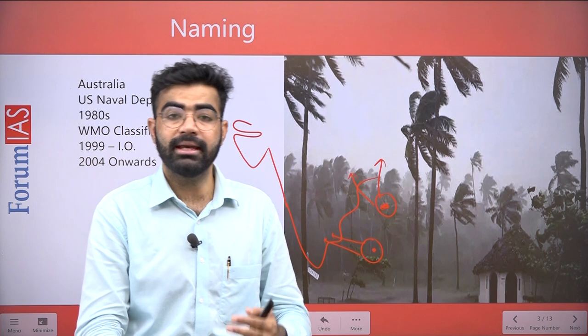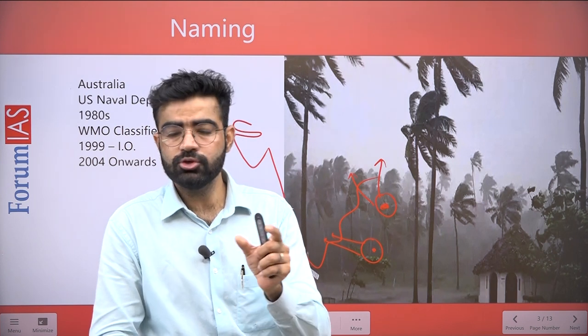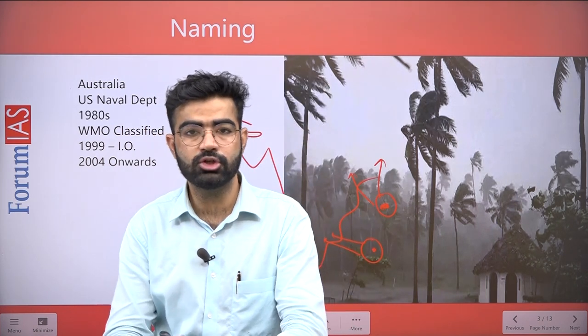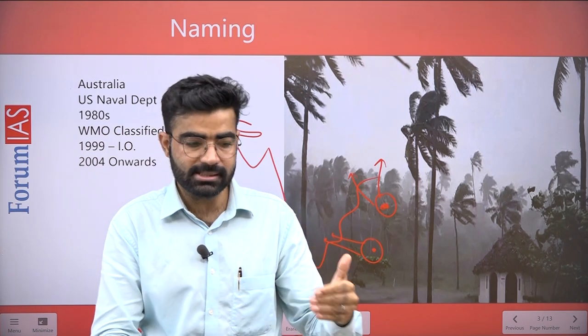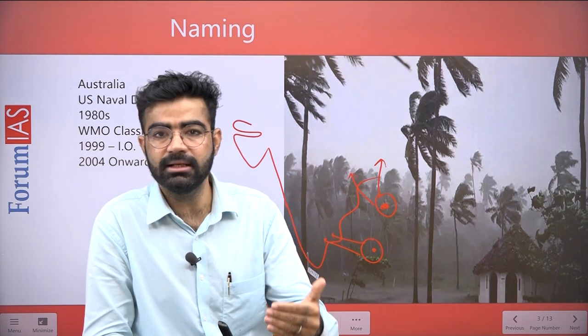Now let's talk about how naming started. First of all, there was an FM channel that started it — corrupt politicians were named as cyclones by that channel, which was later obviously closed. But that concept was taken by the US Naval Department. An officer there wrote a book called 'The Storm' and started naming cyclones — and the special thing was that all the names given to cyclones were his ex-girlfriends' names. That is the reason you see names like Katrina and Maria — female names were given to cyclones from the start.